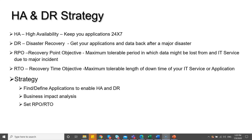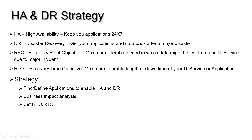High availability is about how you can make your applications highly available, possibly 24x7 or 99.9% SLA. Disaster recovery is about how you will recover when unexpected incidents, accidents, or some disaster occurs in the region where you have hosted your servers.